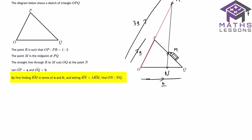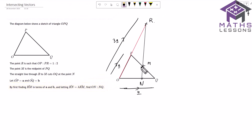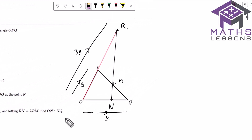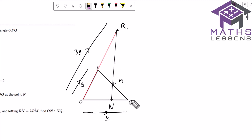By first finding RM in terms of a and b, and letting RN equal lambda times RM — making RN a multiple of RM because it's on the same line — the vector will be a multiple of the other vector. We're going to find the ratio ON to NQ. Effectively we're finding the intersection of RM onto OQ, so we need to find a relationship for RN and a relationship for OQ, and where they intersect gives us N.